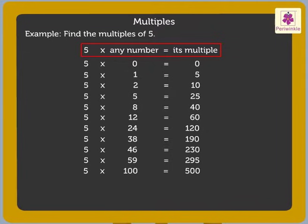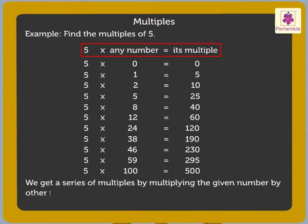Thus, we get a series of multiples by multiplying the given number by other numbers.